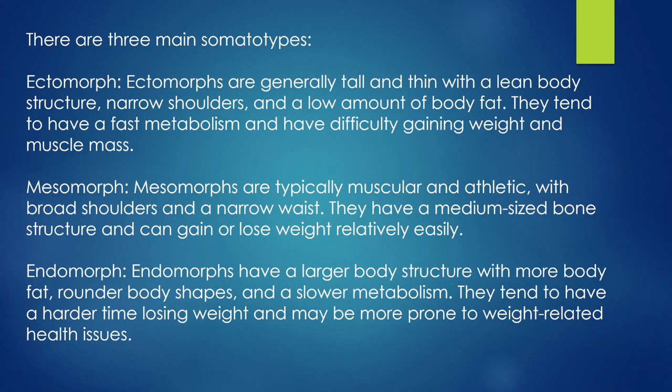There are three main somatotypes: ectomorph, mesomorph, and endomorph. Ectomorphs are generally tall and thin with a lean body structure, narrow shoulders, and a low amount of body fat. They tend to have a fast metabolism and have difficulty gaining weight and muscle mass.